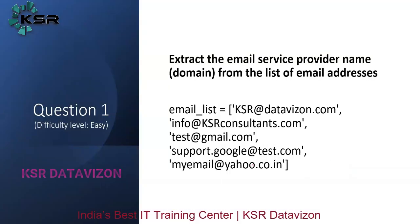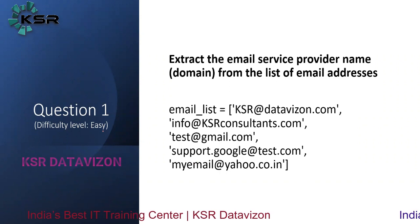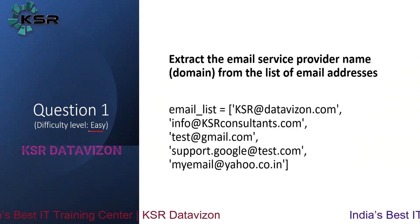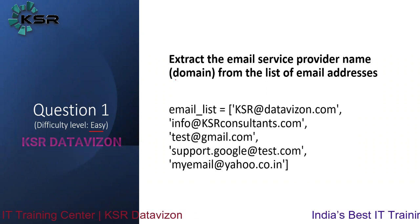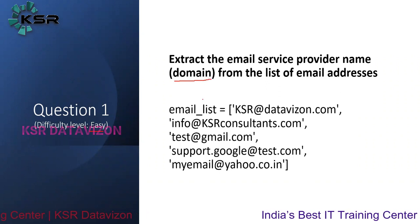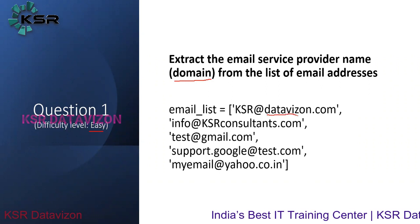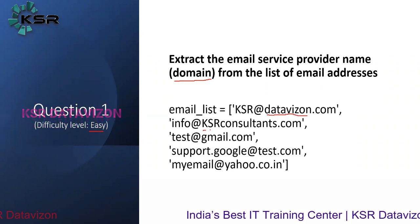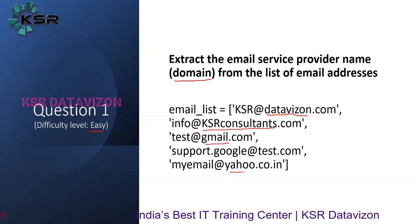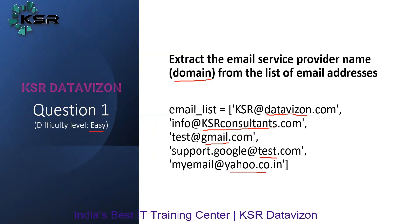In this video we shall look at a couple of questions on regex. The difficulty level for these questions is easy. The first question is: extract the email service provider name, or the domain name, from a list of email addresses. Given a list of email addresses, we have to extract values like 'datavision', 'ksrconsultants', 'gmail', 'test', 'yahoo', etc. — these are the domain or email service provider names.